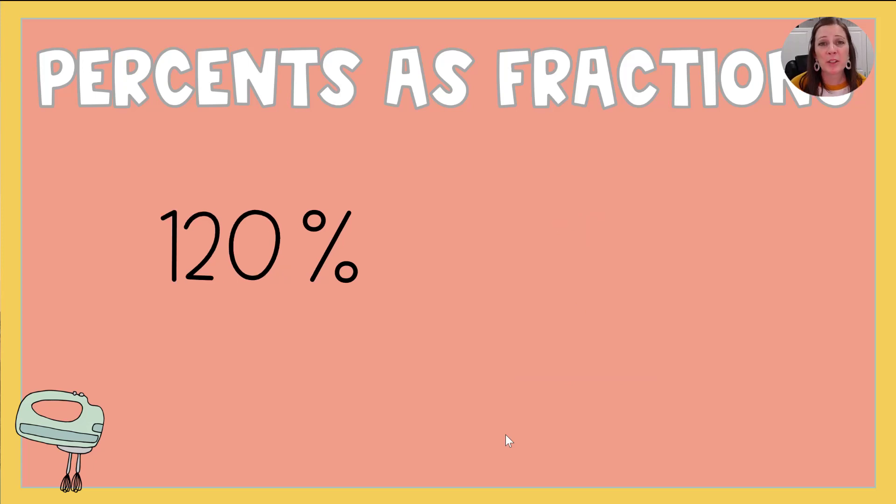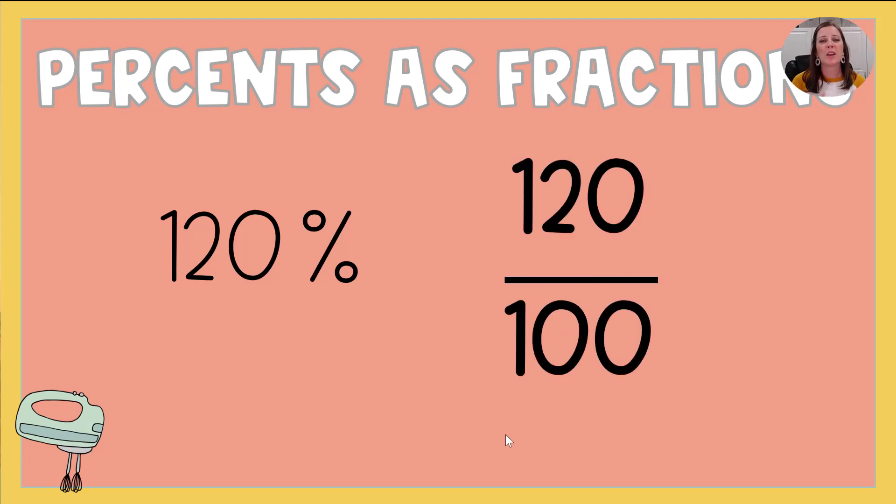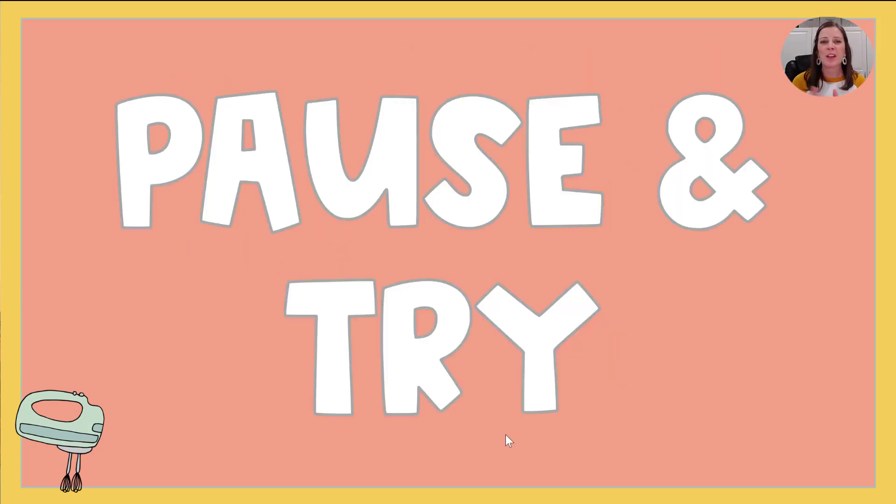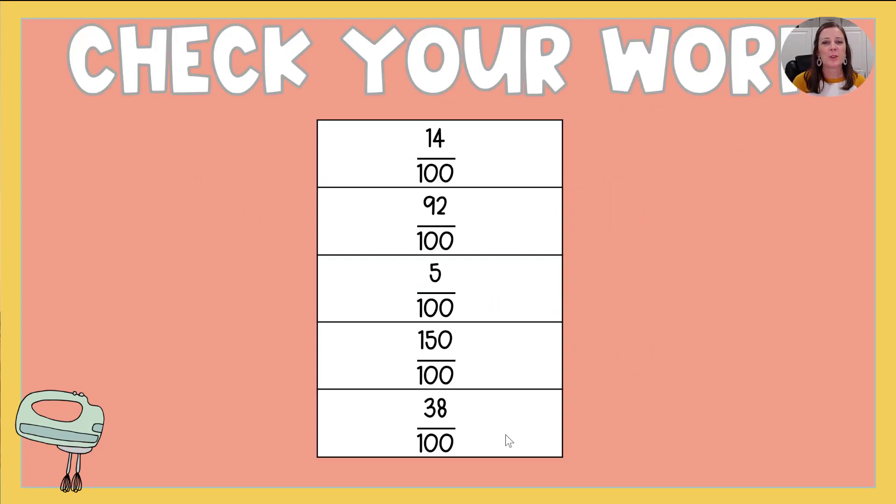And then if I have 120 percent, we get a fraction bigger than 1 because it's 120 out of 100. So whatever your percent is, you put it over 100 because percent means out of 100. And that's how you turn a percent into a fraction. Pause the video and try the next few on your own. So hopefully these are the answers you came up with. If not, go back and rethink those.